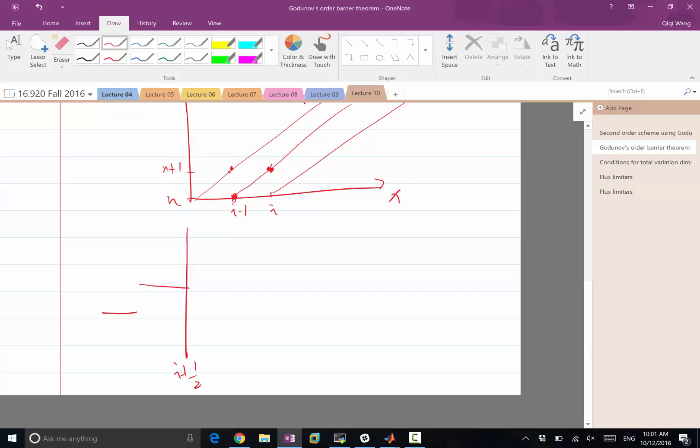So we have two cell averages here, we have two cell averages over here, we want to reconstruct the solution here, and the reconstruction cannot be linear.